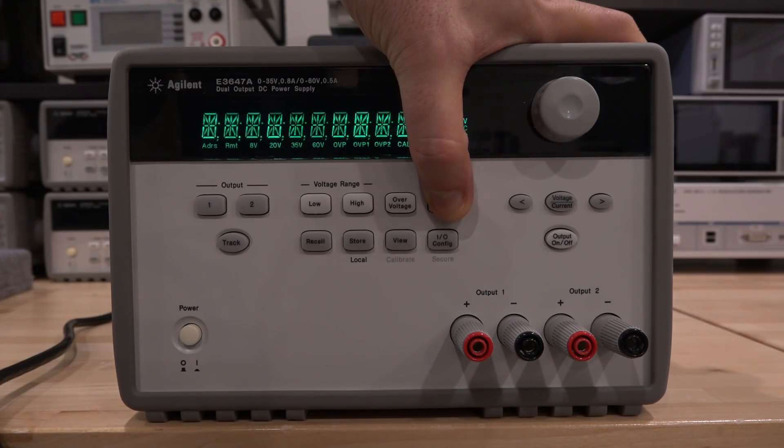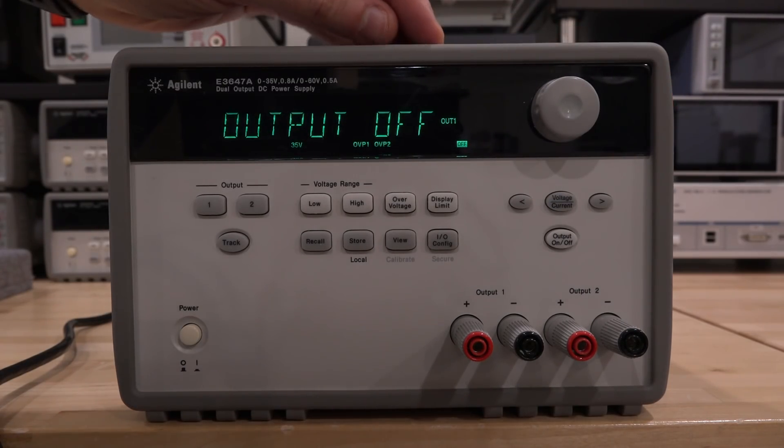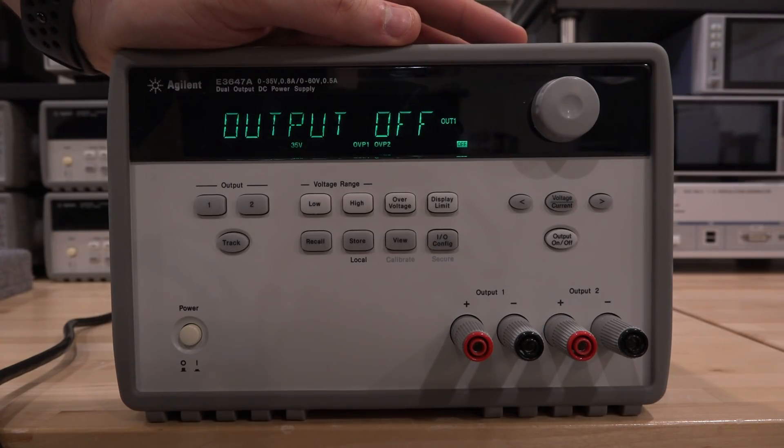Let's connect it to a DC load. I just want to make sure that it is working fine, but again, really simple repair here. I really didn't do much. So let's connect it to the BK Precision 8601, which is a DC electronic load.